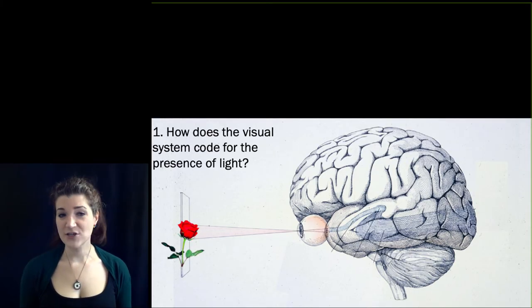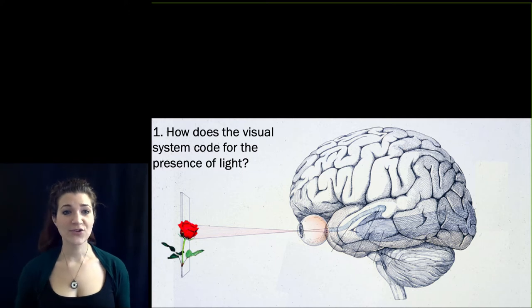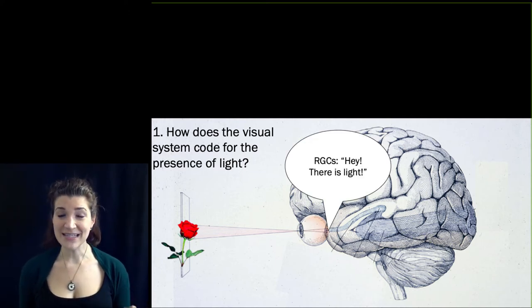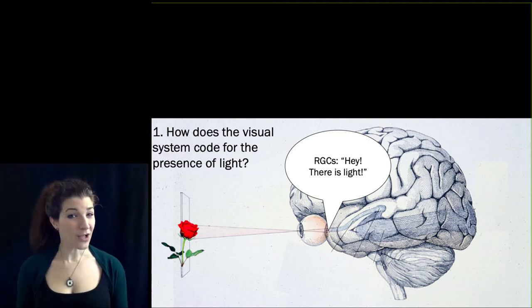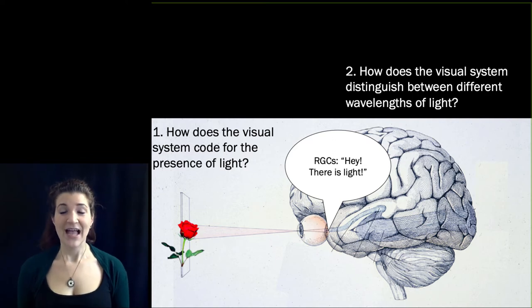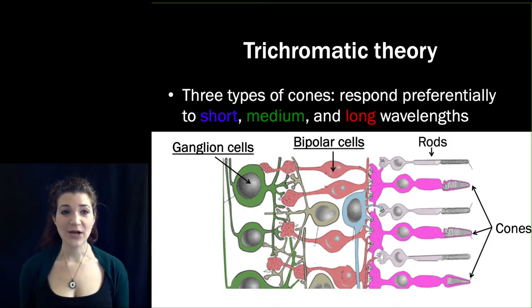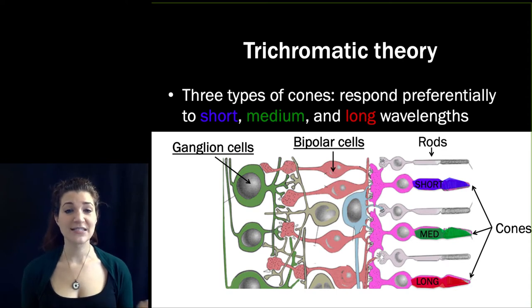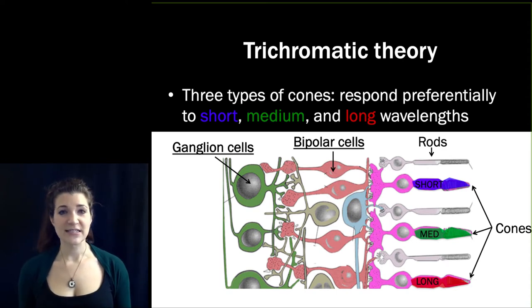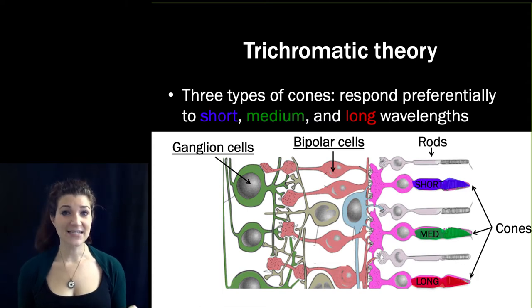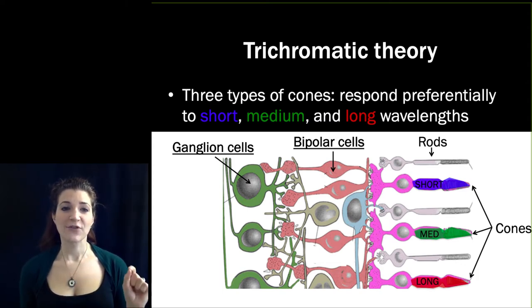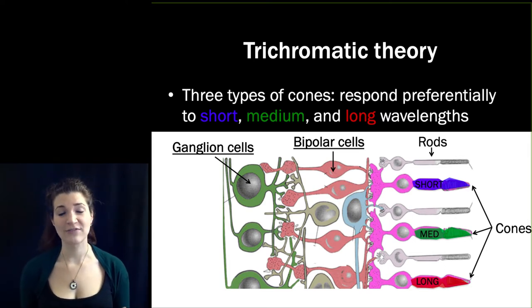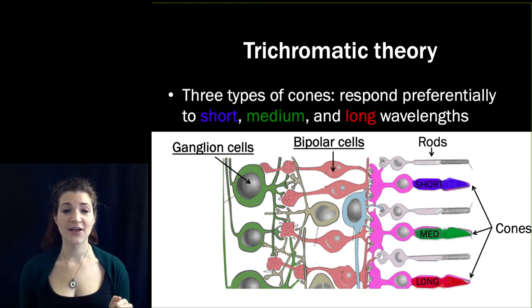So at this point we can answer: how does the visual system code for the presence of light? The rate of action potentials in the retinal ganglion cell is sensitive to changes in illumination. But we also want to know how much light and what wavelengths — and for that we turn to trichromatic theory. Trichromatic theory describes the fact that there are three different types of cones in the retina, each maximally sensitive to different wavelengths of light, due to different types of photopigment — the retinal in each cone type is sensitive to different wavelengths. So if short wavelength light hits the retinal in a long wavelength sensitive cone, it isn't likely to cause isomerization and ultimately wouldn't change the firing rates of the retinal ganglion cells.